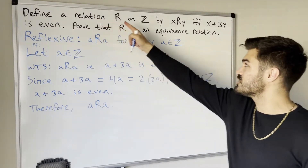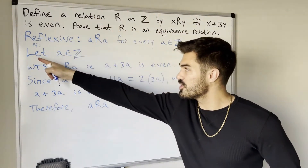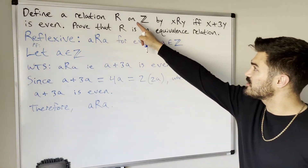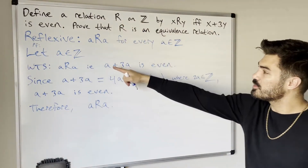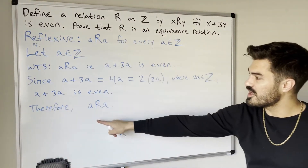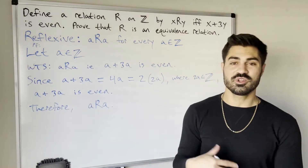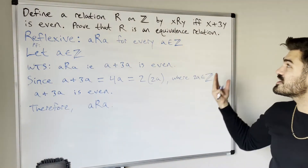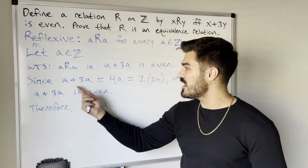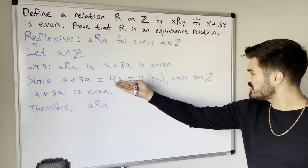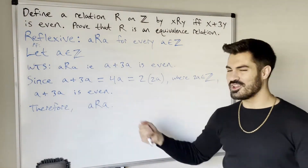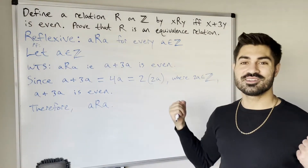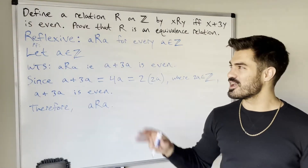That's the general structure for proving reflexivity: start with an arbitrary element in the set the relation is defined on, then show that element is related to itself. What exactly you show depends on how the relation is defined — in this case we showed a plus 3a is even, which we did in about a line and a half.